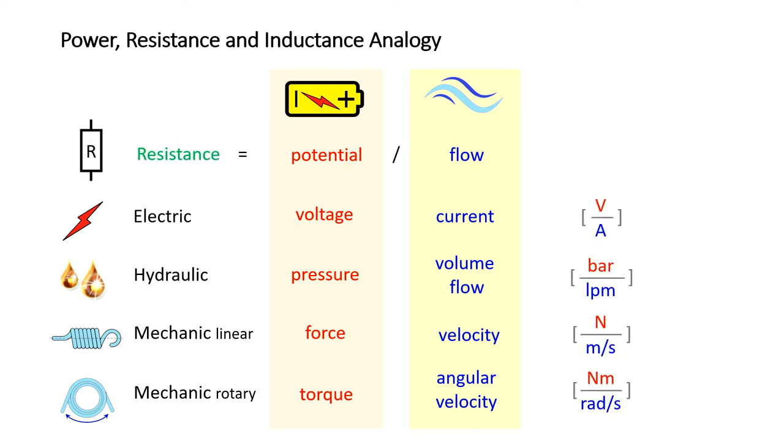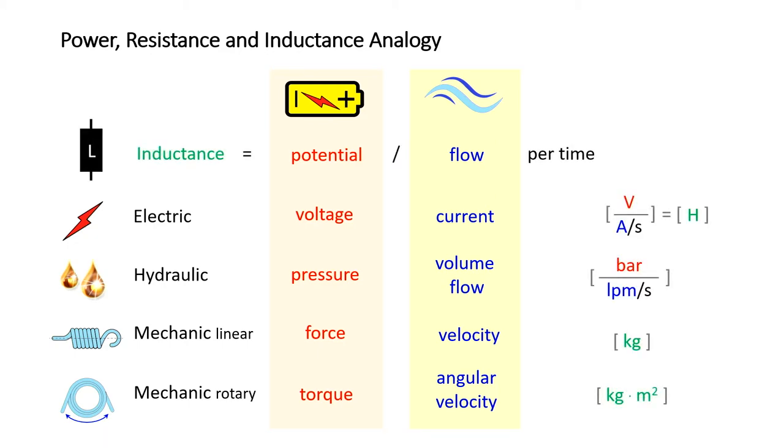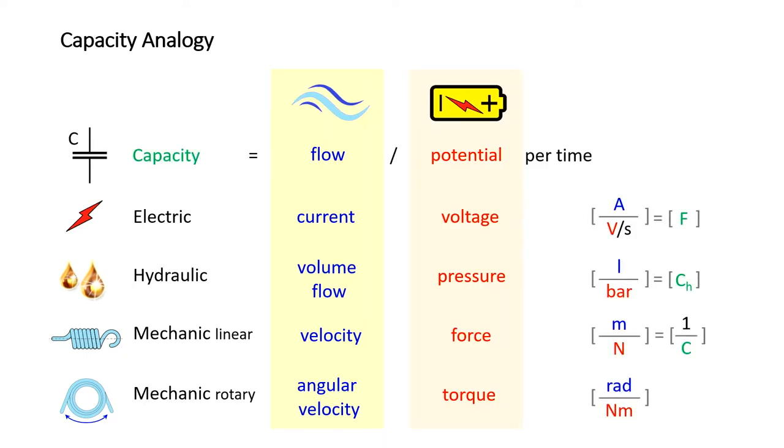This analogy is going further on. If you take a look at the resistance in the system, you divide potential by flow. And so we have now an idea of what is hydraulic resistance and how can I calculate it. You need pressure and divide it by volume flow. Inductance also is very interesting. Therefore, we take the potential and divide it by flow per time. For example, if you now take a look at the linear mechanic, if you do this with force and velocity, the result is the mass. So mass in the mechanical linear mechanic is nothing else than an inductance. And for a rotating mechanic, it is the inertia. Last of it, capacity. There, we have to divide flow by potential per time.